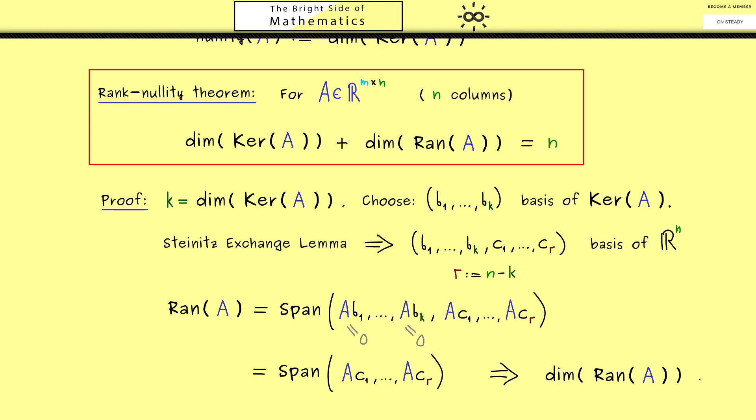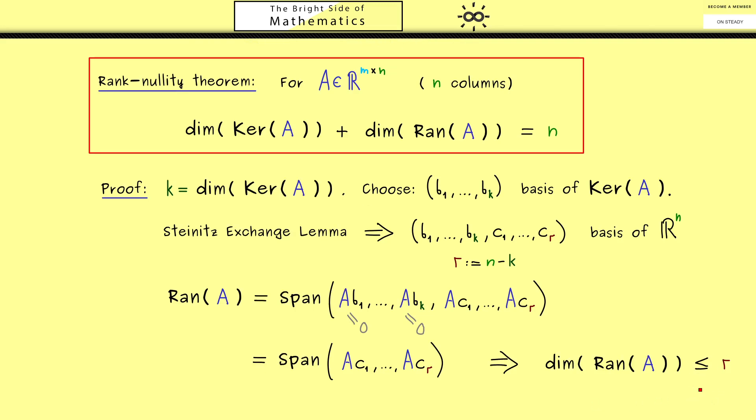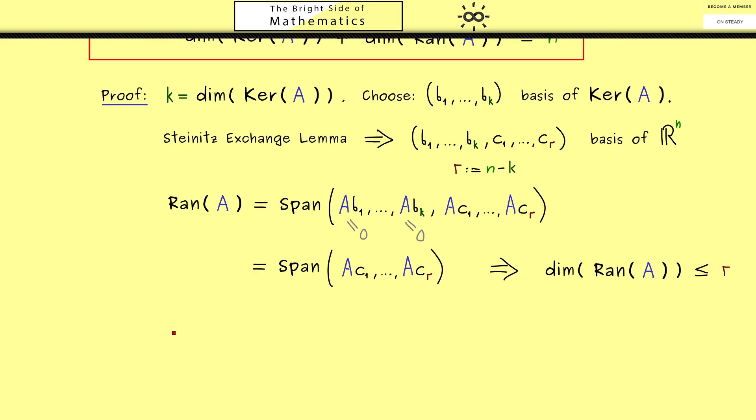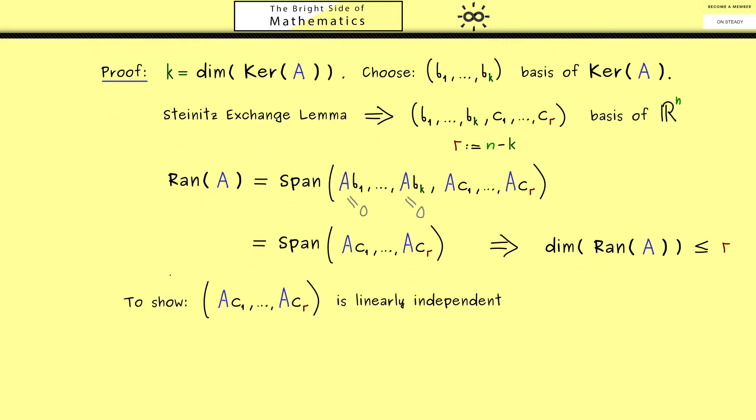And with this conclusion, we have shown the first part of the proof. So please recall, we want to show that this dimension is exactly r. And now you see, we have already one inequality here. Now in order to show the equality here, we now have to prove that these vectors here are linearly independent. So let's write that down and then we do it. So this is our next step here: we show that this family is linearly independent.